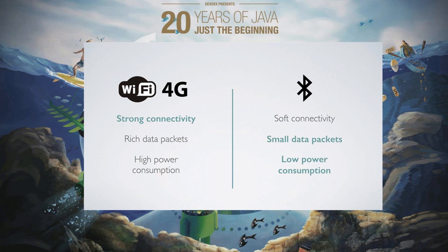What we exactly need is: strong connectivity — devices directly connected to the internet. Data packages can be small; we don't need to send videos or images, just small data like status updates or coordinates. And since these devices are usually not connected to the electricity grid, we need low power consumption — reducing energy usage as much as possible.